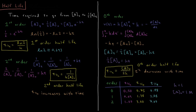For zero order, the concentration is decreasing linearly over time. The more reactant we have, the longer it takes to consume half of it. Whatever time it takes to consume half of our initial reactant, once we get to half the initial concentration, consuming half of that takes only half as long. Then consuming half of one-fourth takes one-fourth as long. The half-life is directly proportional to concentration, so the half-life is decreasing over time for a zero-order reaction.